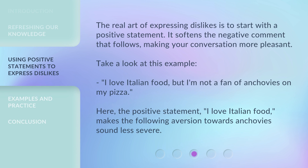The real art of expressing dislikes is to start with a positive statement. It softens the negative comment that follows, making your conversation more pleasant. Take a look at this example: 'I love Italian food, but I'm not a fan of anchovies on my pizza.' Here, the positive statement 'I love Italian food' makes the following aversion towards anchovies sound less severe.